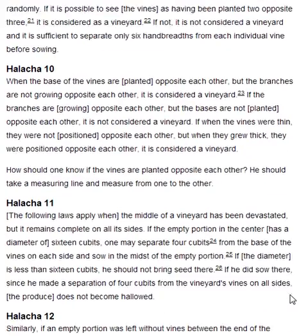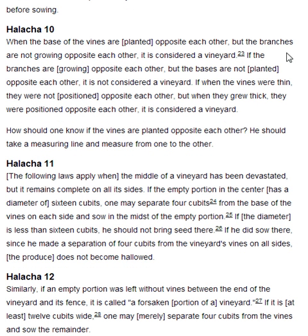Halakha 10. When the base of the vines are planted opposite each other, but the branches are not growing opposite each other, it is considered a vineyard. If the branches are growing opposite each other, but the bases are not planted opposite each other, it is not considered a vineyard. If when the vines were thin they were not positioned opposite each other, but when they grew thick they were positioned opposite each other, it is considered a vineyard.